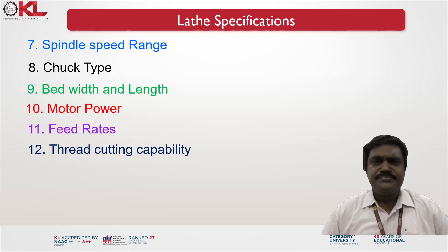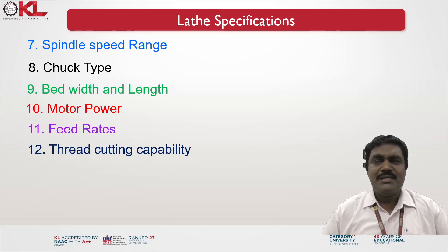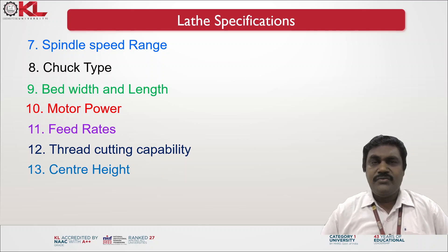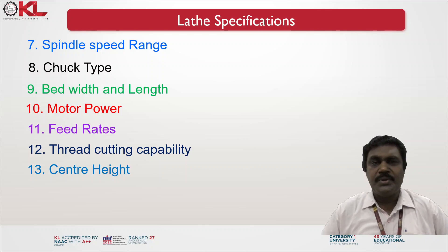Next is thread cutting capability — what type of threads you can cut on the lathe machine. There are several types of thread profiles available, and you can specify which thread profiles you are going to cut. That is the thread cutting capability. Then center height — the height of the dead center and live center from the bed, which determines the maximum diameter of the workpiece that can be accommodated and machined.